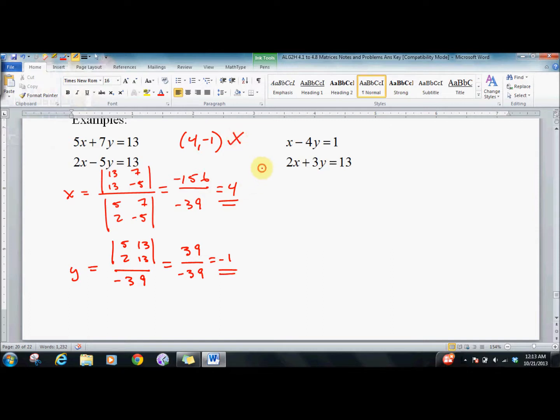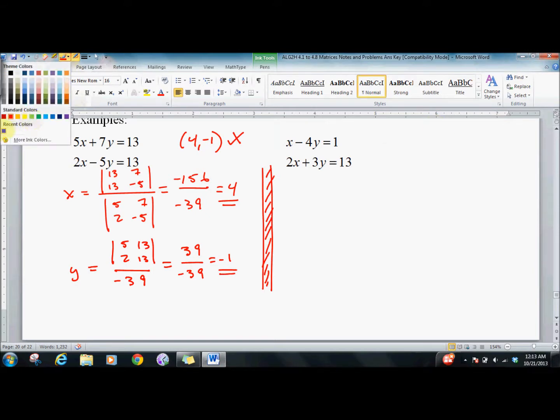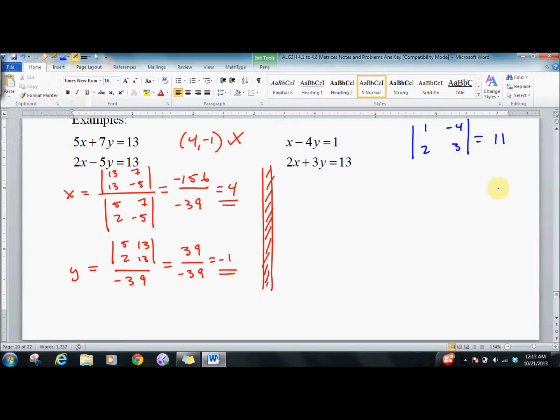I would recommend trying it again over here. You might want to come up with a cleaner way to do it. For example, just knock out the main determinant: 1, 2, negative 4, 3. Just put it up here: 3 minus negative 8 is 3 plus 8 is 11. But do the rest of it on your own.